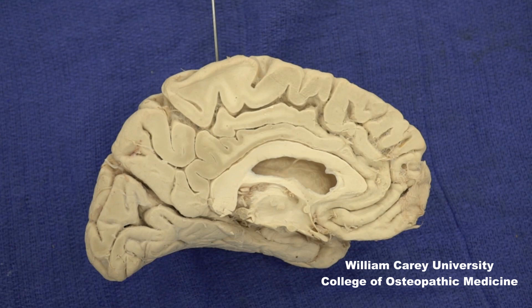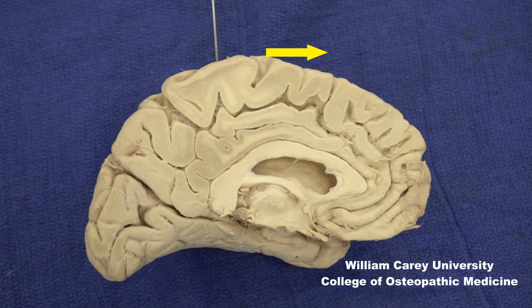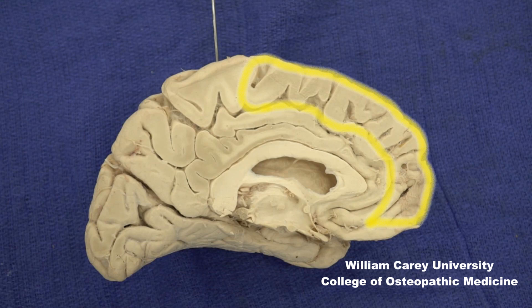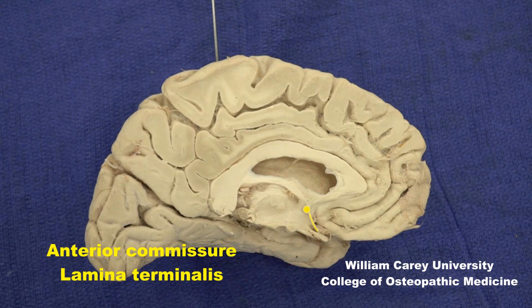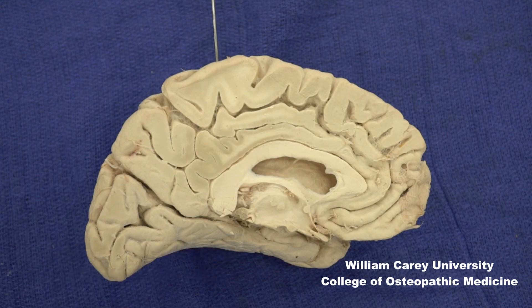Speaking of contributions of the frontal lobe to the medial surface of the brain, let us observe the top of the central sulcus marked by the pin. As we move anterior to it, we are in the frontal lobe, tracing the medial extension of the superior frontal gyrus. We can do this all the way to the ventral-most and anterior-most portion, the gyrus rectus, which we have already seen from the ventral perspective. The subcallosal area is formed adjacent to the lamina terminalis and the anterior commissure, just ventral to the anterior-most portion of the corpus callosum here.